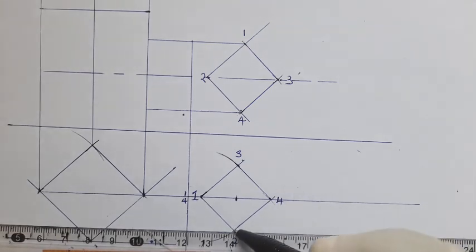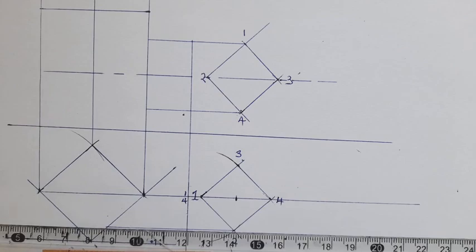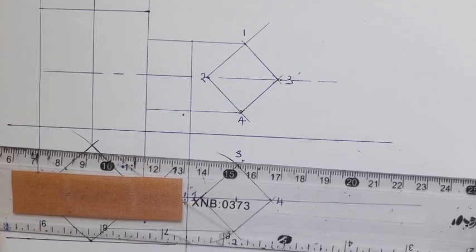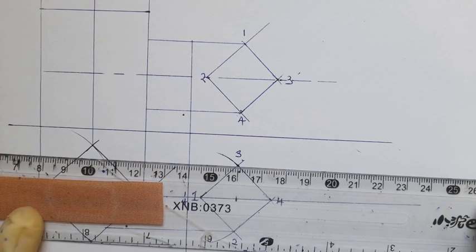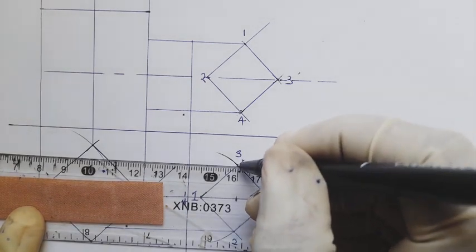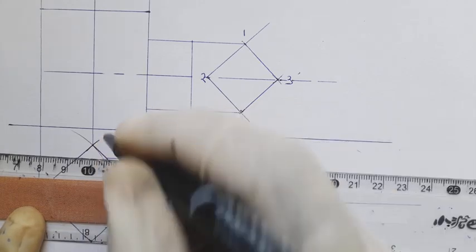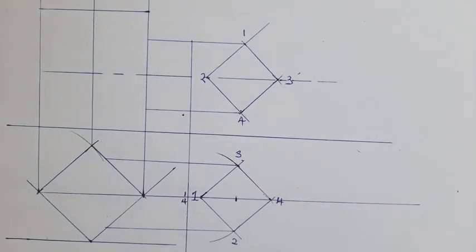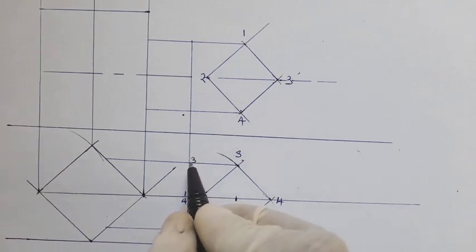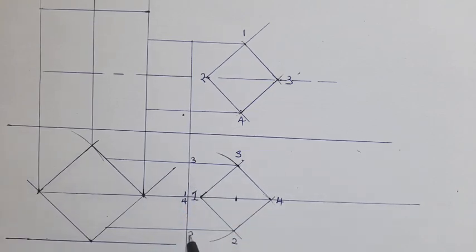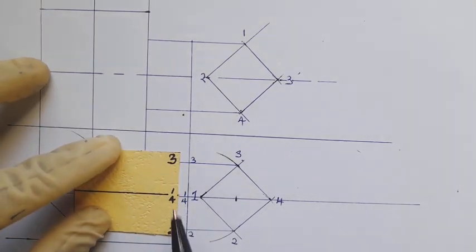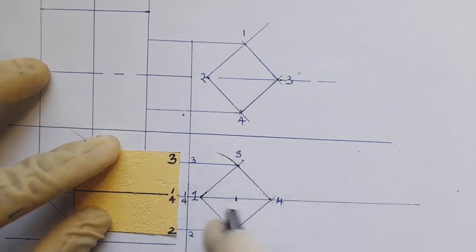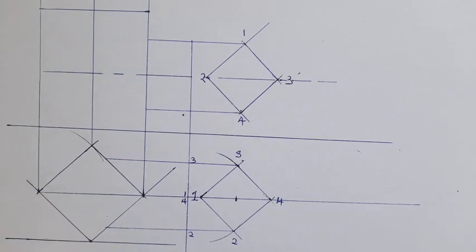Projecting from the end elevation: point three comes across and meets the plan line there, and point two also comes and meets the plan line. So we have point three and point two established on the plan as per our labeling one, four, two, three. This completes the identification of all intersection points on the plan.